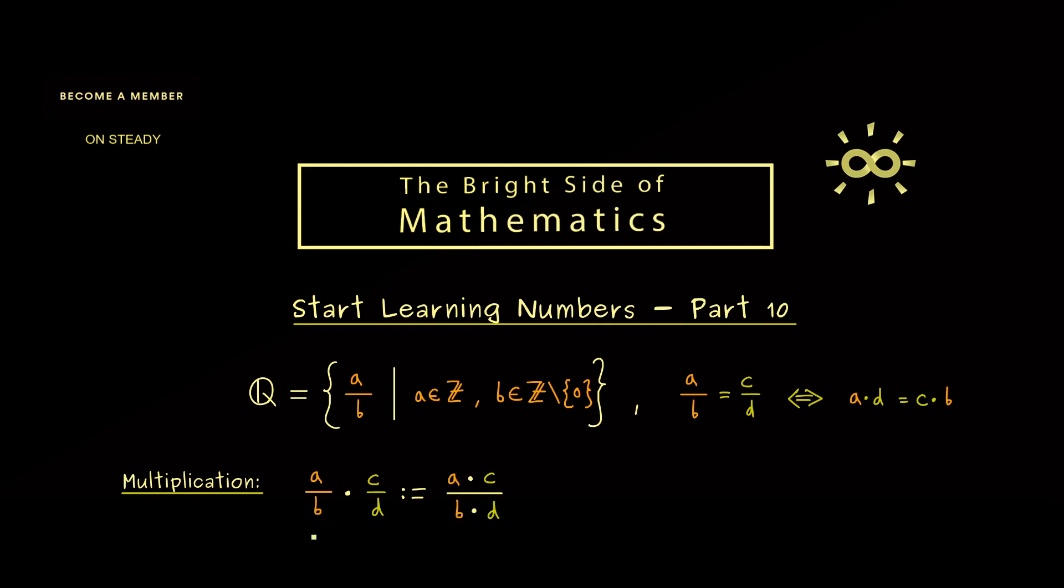Therefore the new fraction that should come out here has a times c in the first component and b times d in the second component. Here we have the new multiplication and here the old multiplication. And it is also well-defined, which means the outcome stays the same when you change the representation of the inputs. For the proof I don't have to go into details because we already did this for the integers.